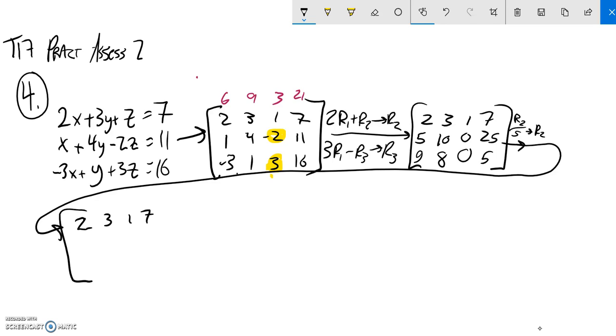And that just gives me some friendlier numbers to work with. So, 2, 3, 1, 7, and then a fifth of all this. So, 1, 2, 0, 5. And then that third row is unaffected.